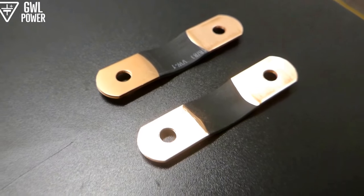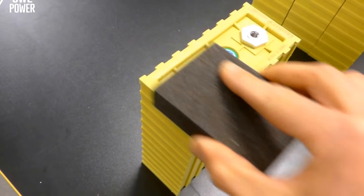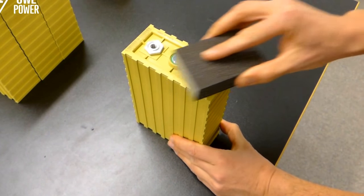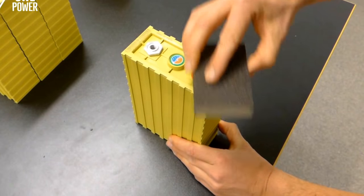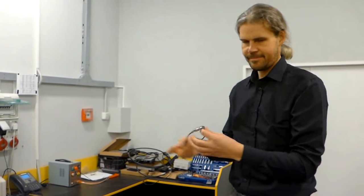It is very important to clean all connectors and terminals perfectly with sandpaper just before assembly. Even small resistance between cells would disbalance the battery. Remove all metal things from your hands.